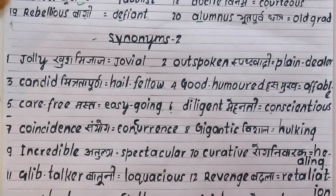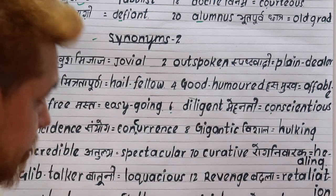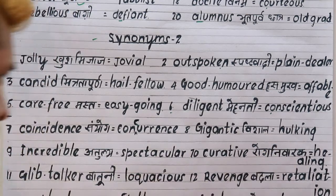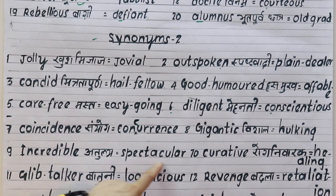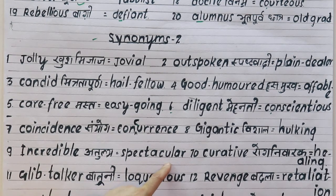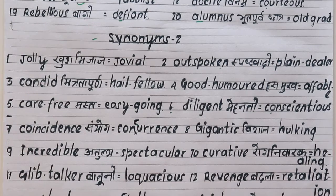Ninth is 'incredible', meaning unbelievably good — incredible India! The synonyms are 'spectacular', 'wonderful', 'excellent', and 'marvellous'. Tenth is 'curative', meaning related to healing or treatment. The synonym is 'curable' or 'healing'. For example: nowadays even cancer is a curable disease.